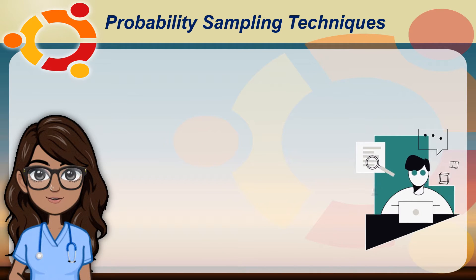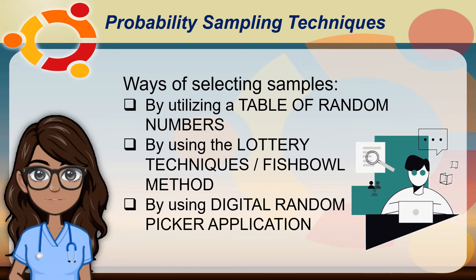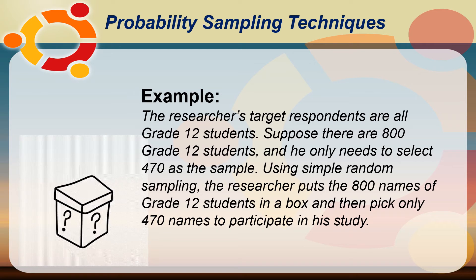Here are ways of selecting samples: first, by utilizing a table of random numbers; second, by using the lottery technique or the fishbowl method; third, by using a digital random number generator application. For example, the researcher's target respondents are all Grade 12 students. Suppose there are 800 Grade 12 students and the researcher only needs to select 470 as the sample. Using simple random sampling, the researcher puts 800 names in a box and then picks only 470 names to participate in the study.